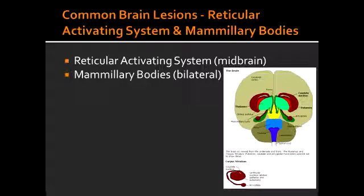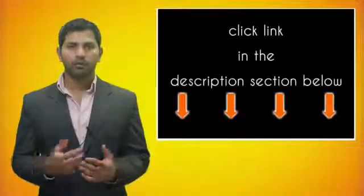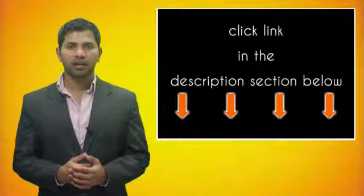What can cause mammillary body lesions? Mammillary body lesions can occur due to thiamine (vitamin B1) deficiency and alcohol use. This can also be precipitated by giving glucose without thiamine to a thiamine-deficient patient.